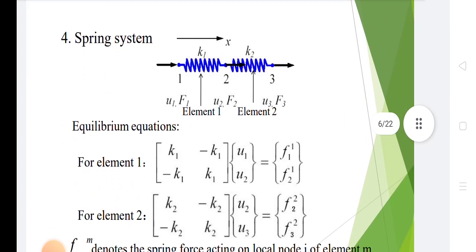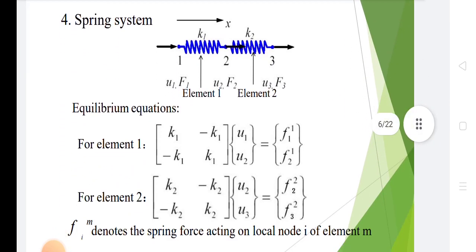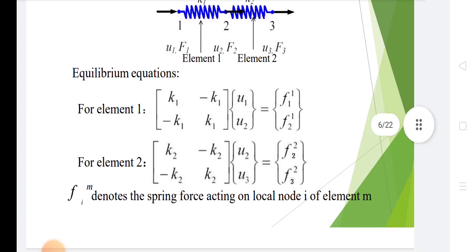This is the spring system. There is spring stiffness given as k1 and k2, with displacement x. The degrees of freedom are u1, f1, u2, f2, u3, f3. This is the displacement for elements 1 and 2. For equilibrium equations, element 1 gives [k1, -k1; -k1, k1] times [u1, u2]. The term fm denotes the spring force acting on local node i of element m.